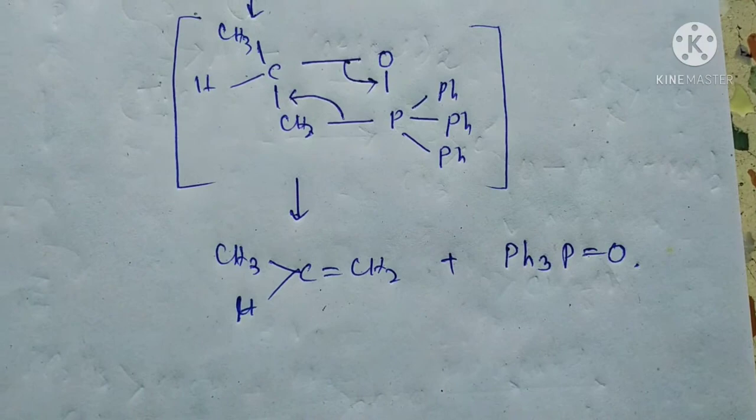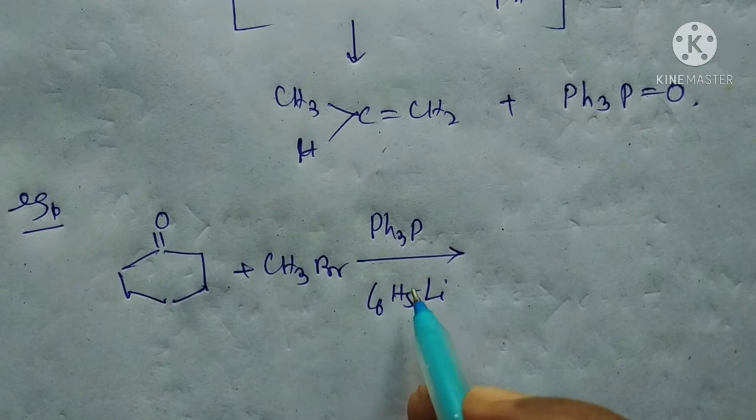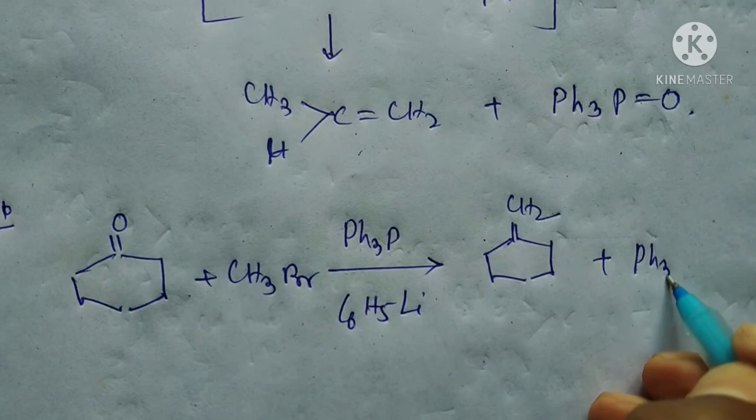Let me give you another example. Cyclohexanone in the presence of methyl bromide, Ph3P, and C6H5Li will form this compound. The ring double bond stays intact, and CH2 replaces the oxygen—this is the key feature of this reaction.